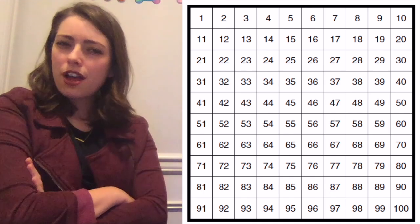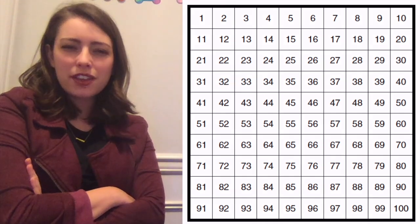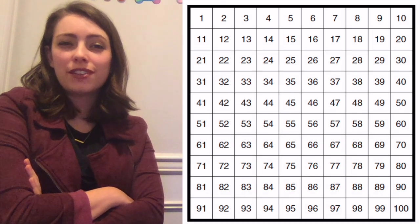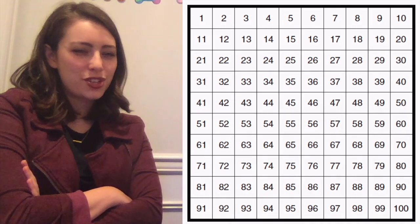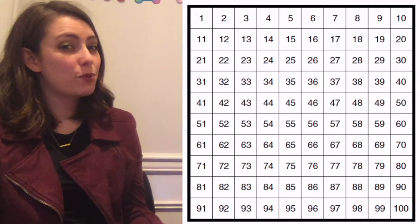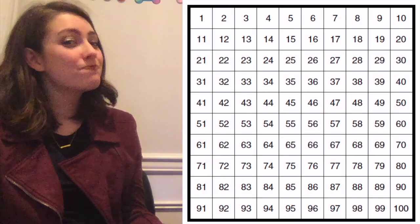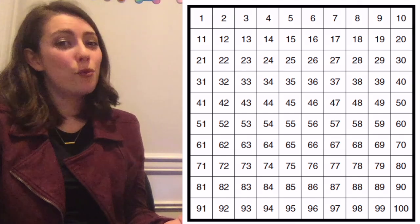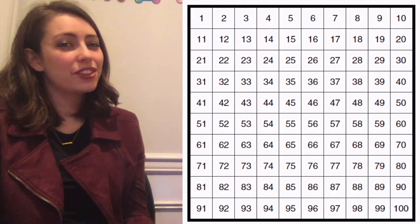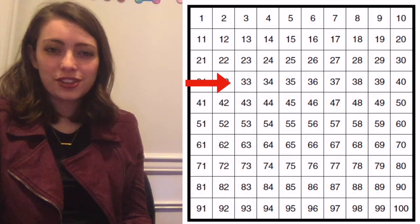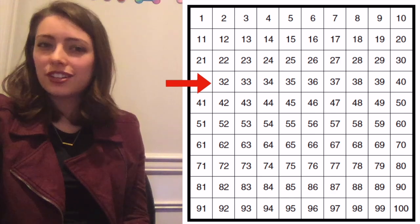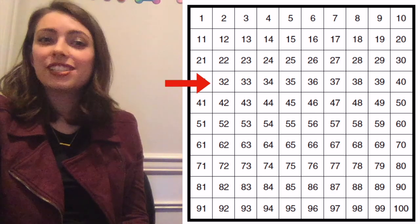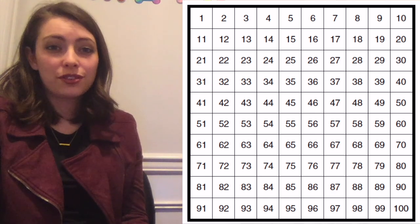Now, I spy the number that is one less than 33 — see if you can point to it. What is one less than 33? One less than 33 is 32, and 32 is to the left of 33.